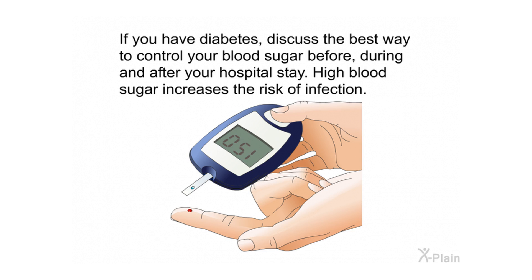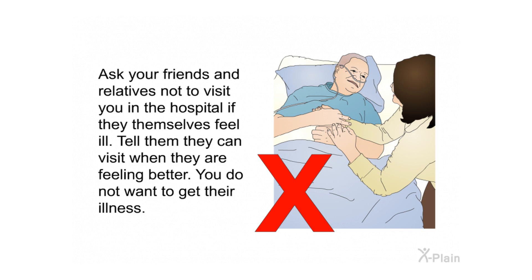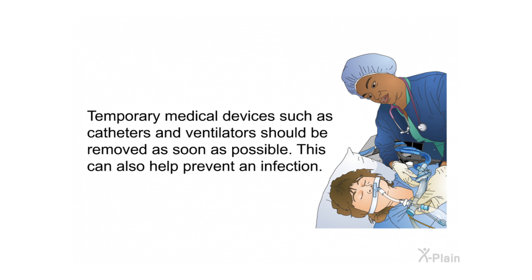High blood sugar increases the risk of infection. If you are a smoker, you should strongly consider a smoking cessation program, as this will reduce the chance of lung infection while in the hospital and may also improve your healing abilities following surgery. Ask your friends and relatives not to visit you in the hospital if they feel ill — they can visit when they are feeling better. Temporary medical devices such as catheters and ventilators should be removed as soon as possible, as this can also help prevent infection.